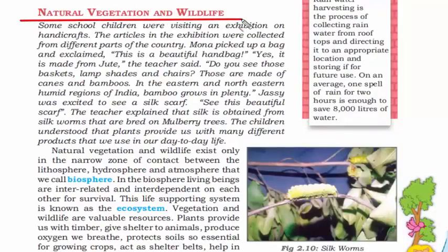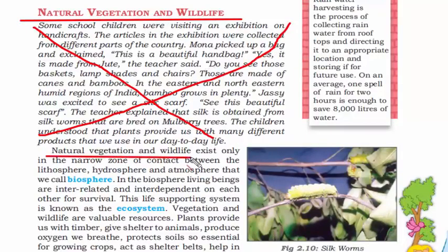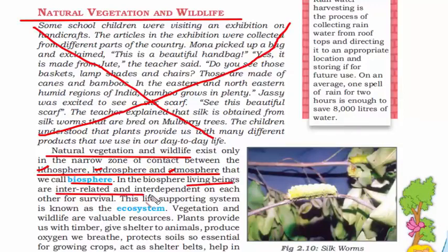The last topic of this chapter is natural vegetation and wildlife. When we say natural vegetation and wildlife, we mean the biosphere — the sphere where the lithosphere, hydrosphere, and atmosphere come into close contact. The lithosphere is the land we stand on, the hydrosphere is all water bodies, and the atmosphere is the air above the land. Living beings in all three zones are interrelated for survival, as humans need land, air, and water. This life-supporting system is known as an ecosystem.